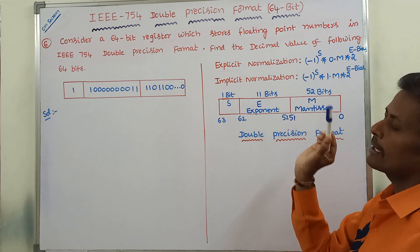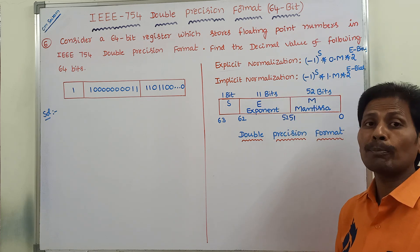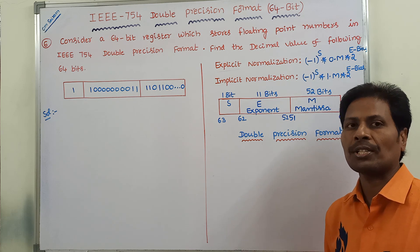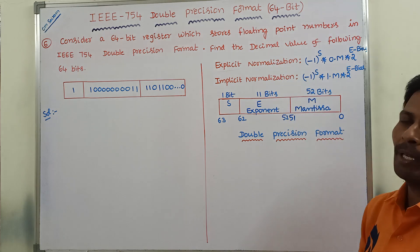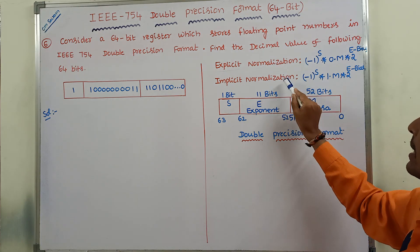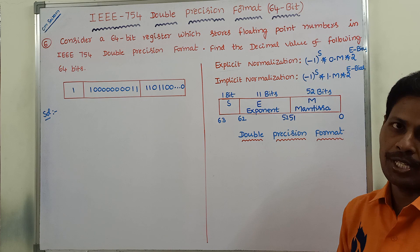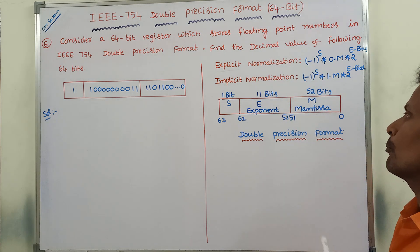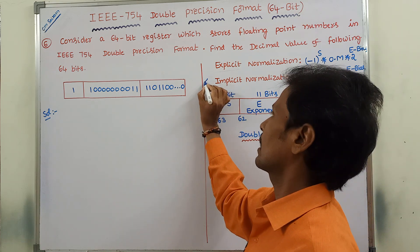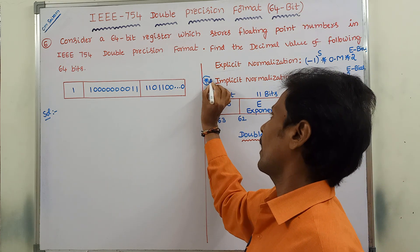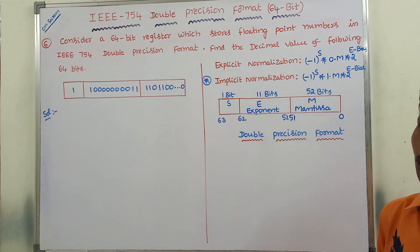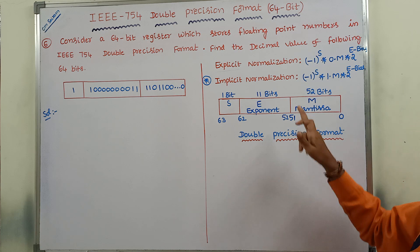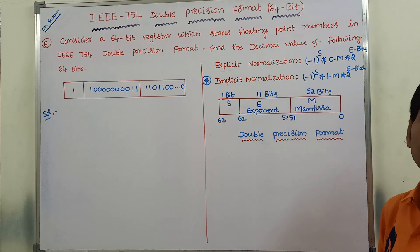In this problem, we have to use normalization. There are two types of normalizations. The first one is explicit normalization, and the second one is implicit normalization. Among the two types of normalization, the default one is implicit normalization. Whether it is specified in the given problem or not, the default one is implicit normalization, so we have to use this normalization.